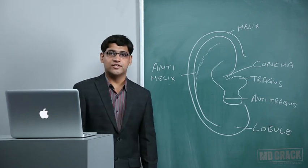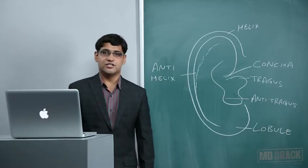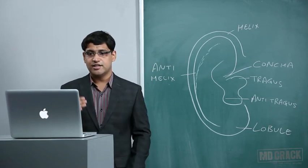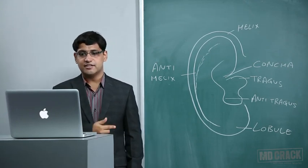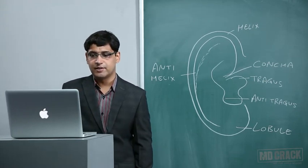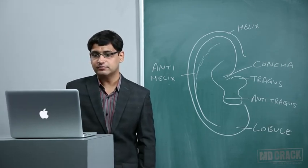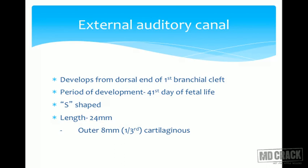The external auditory canal develops from the dorsal end of the first branchial cleft by the 41st day of fetal life. It is S-shaped, so to visualize the tympanic membrane you must push the pinna upward, backward, and laterally. The length of the external auditory canal is 24 millimeters: the outer 8 mm (one-third) is cartilaginous and the inner 16 mm (two-thirds) is bony.